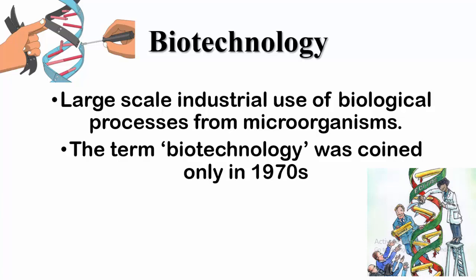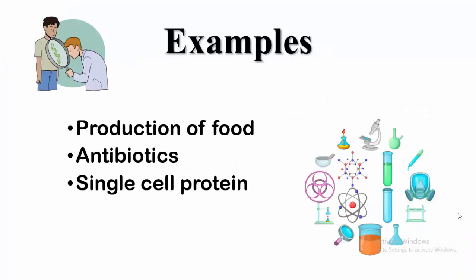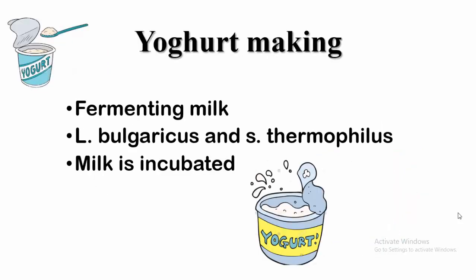The term biotechnology was coined only in the 1970s. Examples of biotechnology are production of food, antibiotics, and single-cell protein. Today we will study the production of foods.